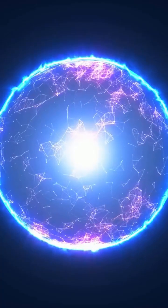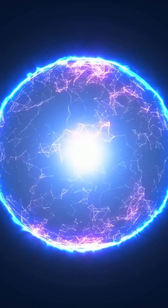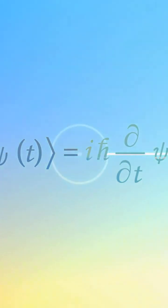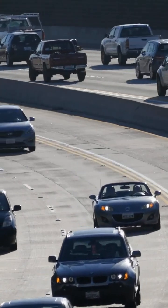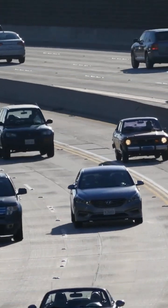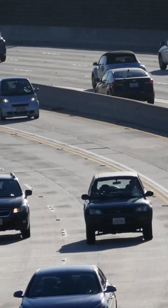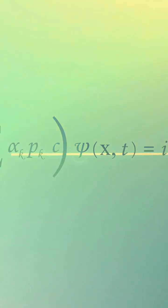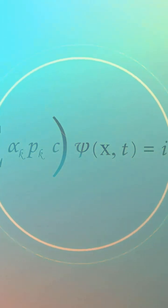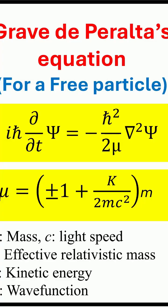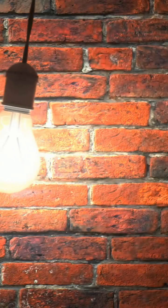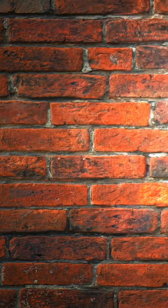In the realm of quantum physics, non-relativistic particles have a common wave. This wave emerges from solving the Schrödinger equation. Classical particles, however, don't have any associated wave. But when it comes to relativistic quantum particles, things get interesting. They have two waves — one common and one exotic. These waves are derived from Graves-De Peralta's equations. Yet the nature of these quantum waves remains a mystery.